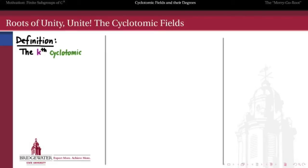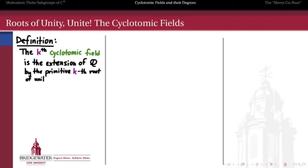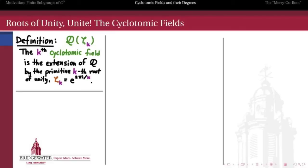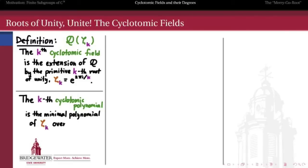Here's our definition in a more general situation. The k-th cyclotomic field is the result of taking the rational numbers and then throwing in a primitive k-th root of unity — it's the extension of the rational numbers by the primitive k-th root of unity. To write the k-th cyclotomic field, we write Q adjoined with zeta k, where zeta k is e to the 2 pi i over k. In order to understand these cyclotomic fields better, we also need to know the minimal polynomial for zeta k over the rationals, since knowing a minimal polynomial gives us a lot of information on the structure of an extended field. We're going to define the k-th cyclotomic polynomial to be the minimal polynomial for zeta k over the rational numbers.